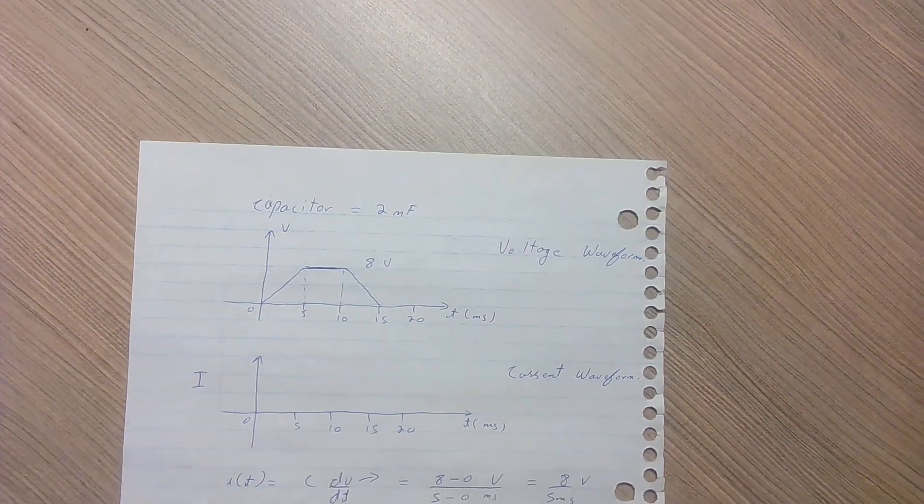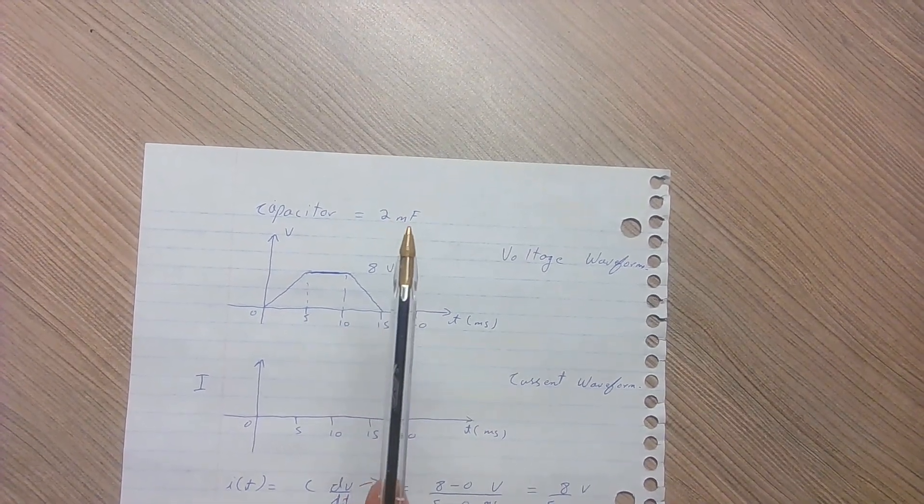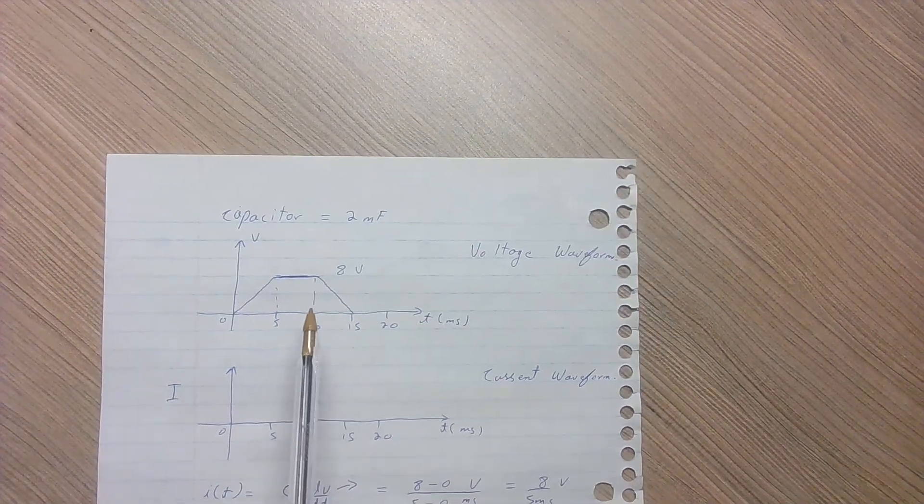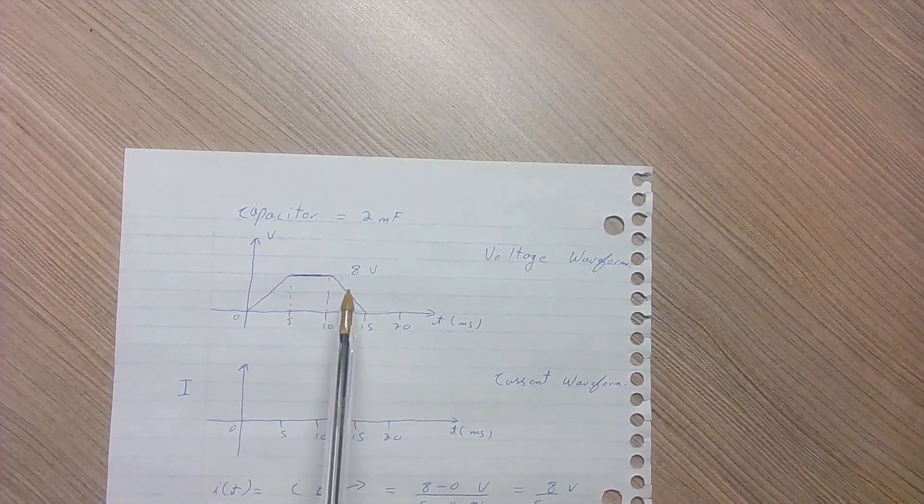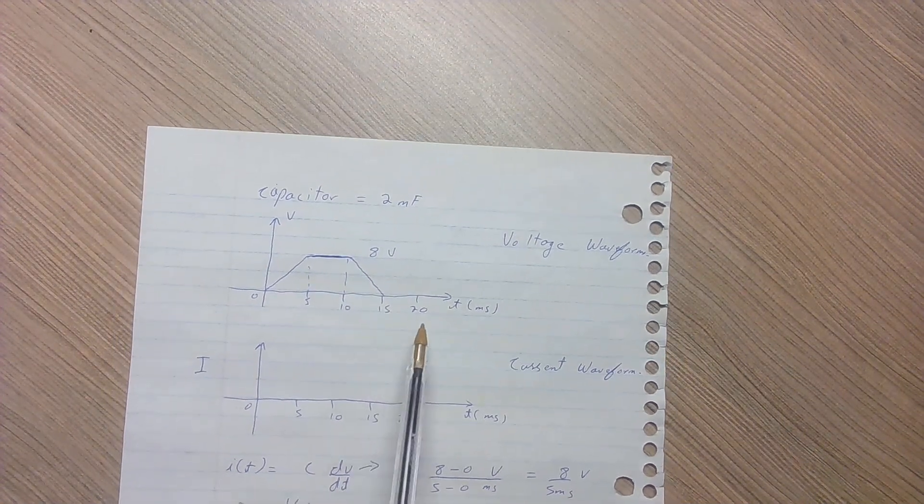In this video I will show you how to calculate the current waveform of a 2 millifarad capacitor when you are given the voltage waveform. As we can see in the voltage waveform, the voltage magnitude reaches up to 8 volts—that's the peak value—and the time is in milliseconds.